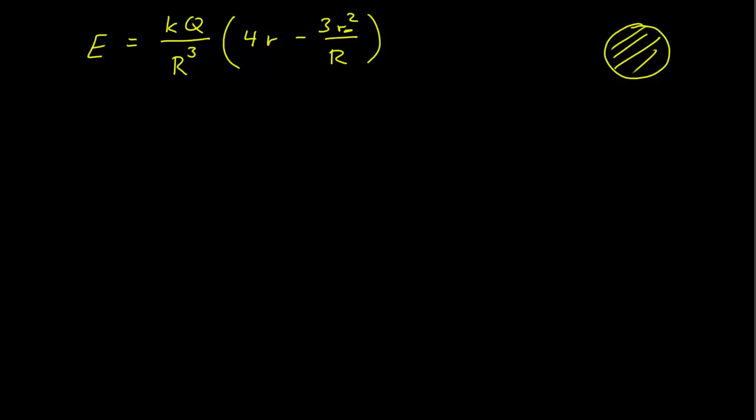So we found before that for a spherically symmetric charge distribution where less than some value capital R, the density distribution was given by a constant times 1 minus R over the radius, which was a linearly decreasing density distribution function from some constant to 0, from 0 to capital R.